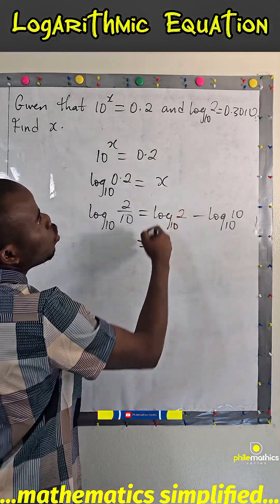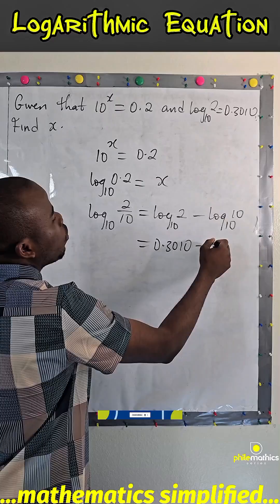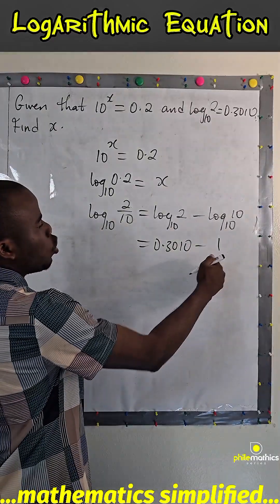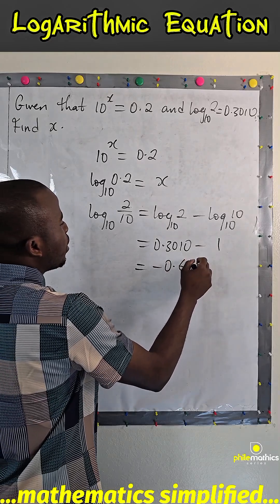So we are given that log 2 to base 10 is 0.3010, and log 10 to base 10 we already know is 1. And so if we subtract this, this will give us minus 0.6990.